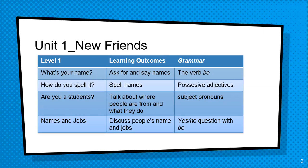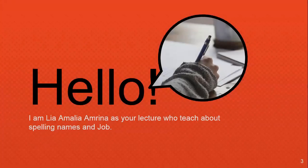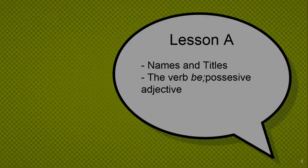In level 1, students talk about where people are from and what they do. We use grammar subject pronouns, name and job — discussing how people's name and job work — and yes/no questions with 'to be'. Hello, I am Ria, your lecturer, who will teach you about spelling, name, and job.